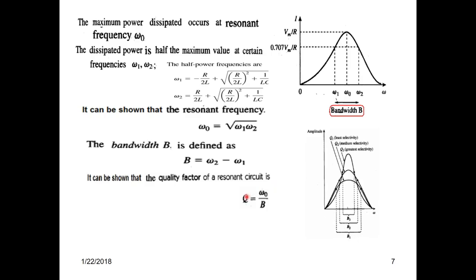Looking at the three graphs on the circuit, the one with a sharp peak has a smaller bandwidth, while the one with a comparatively flat shape has a larger bandwidth.